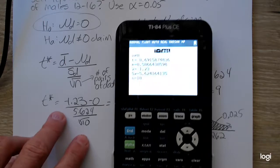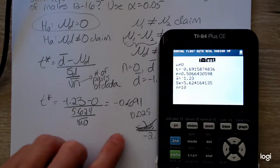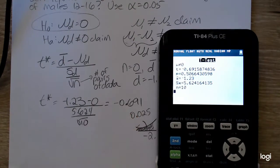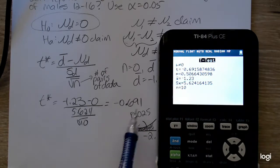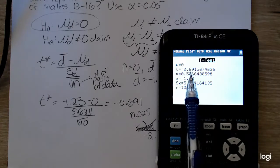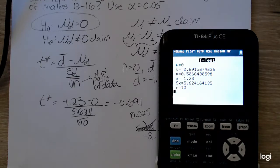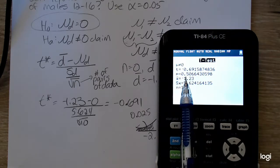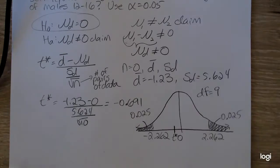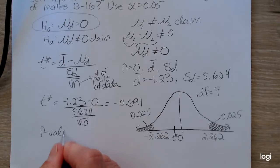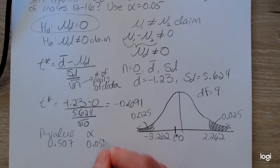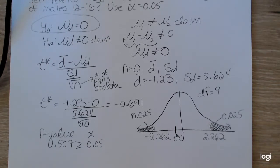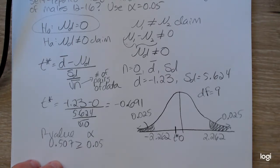Looking at the output, because I did some rounding with the sample standard deviation, my test statistic is slightly different but not by much, not enough to change the decision. And here's the corresponding p-value: 0.507. Comparing it to my level of significance of 0.05, the p-value is greater than or equal to 0.05. So that is consistent with the decision to fail to reject the null hypothesis from the critical value method.